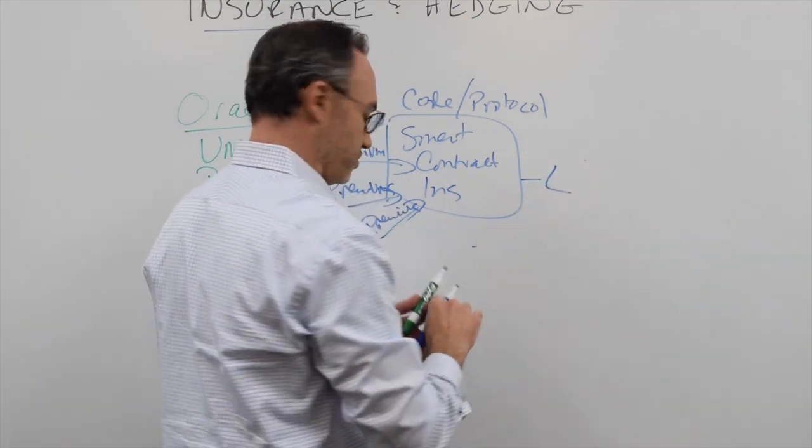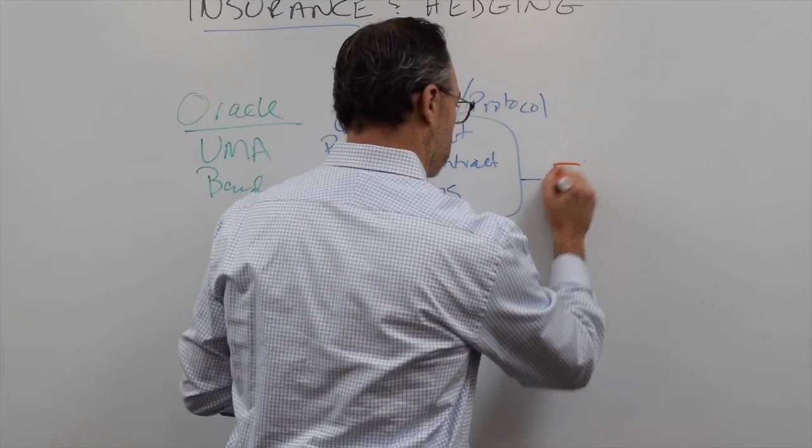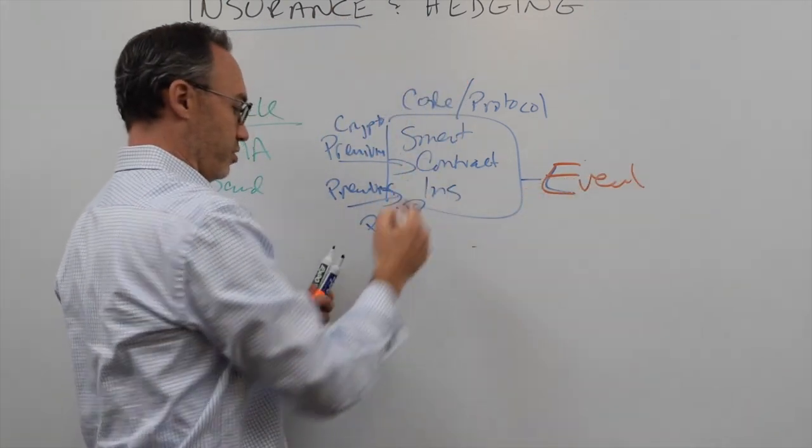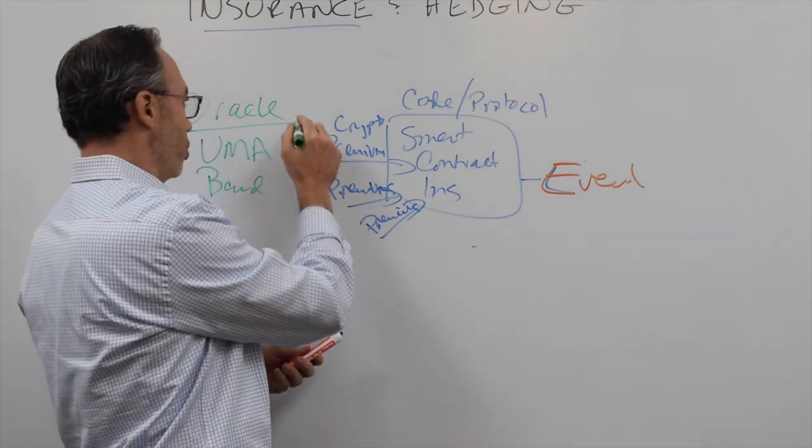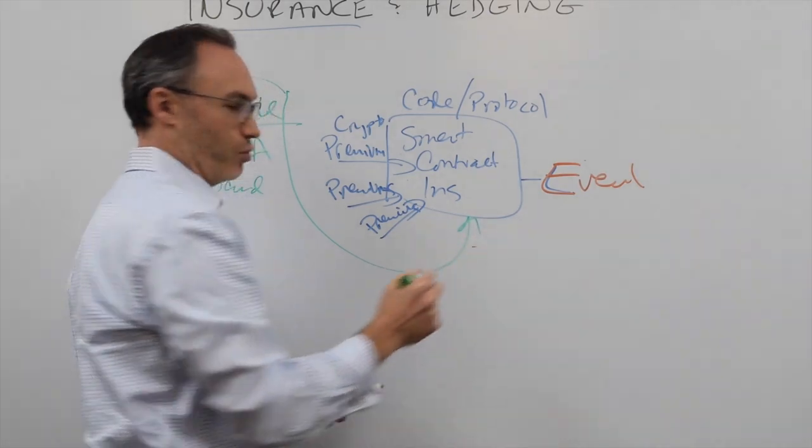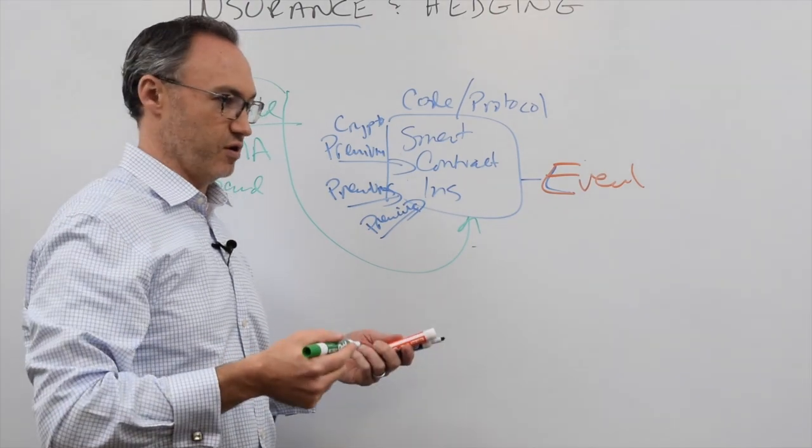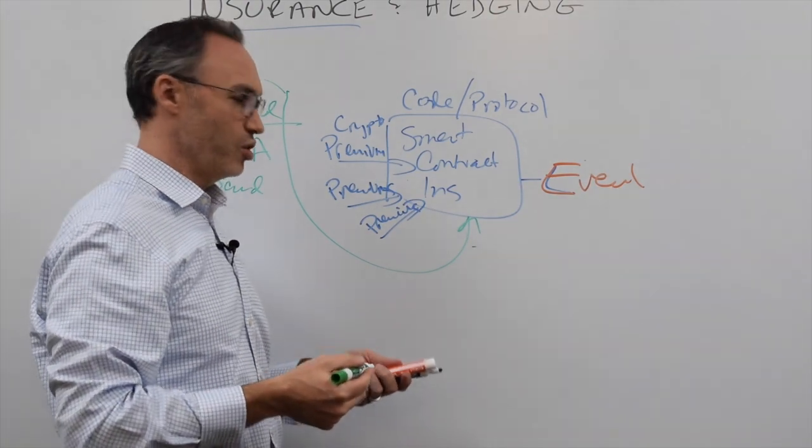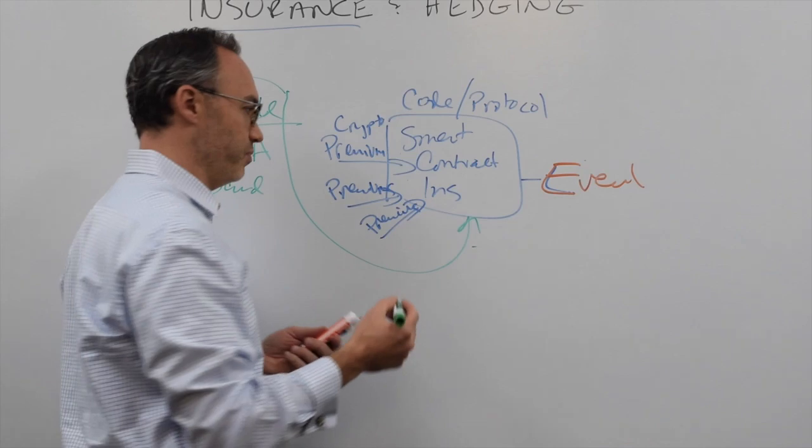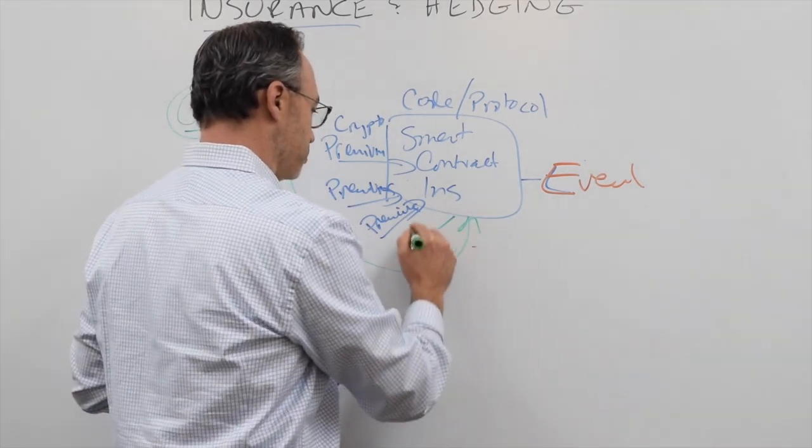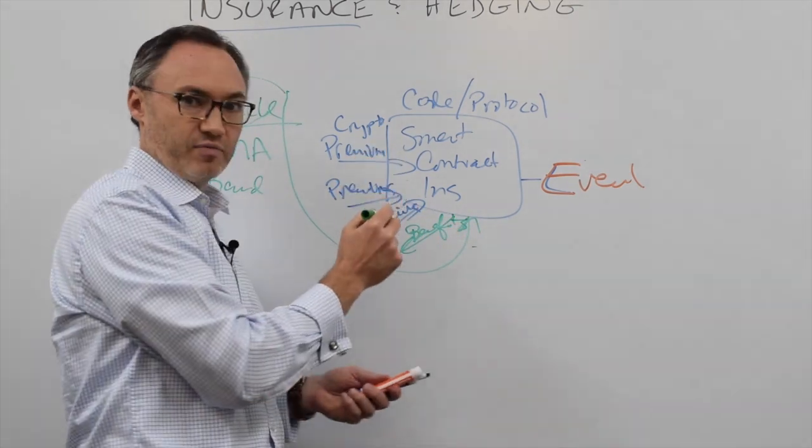As soon as this event happens, this major event, we'll call it, that triggers the payment of benefits, what has to happen is there has to be some oracle here that triggers the contract. And that oracle might be that the temperatures dip below a certain amount, a certain temperature for a certain amount of time killing the crops, or there was some sort of measurement that said enough crops didn't get grown, or there was some pest infestation, whatever it might be, some sort of oracle triggers this contract to pay benefits to the people who paid the premiums, the policyholders.